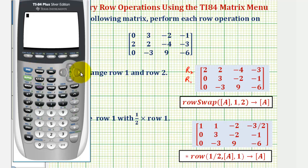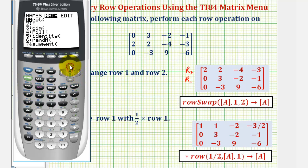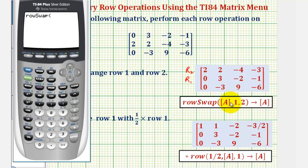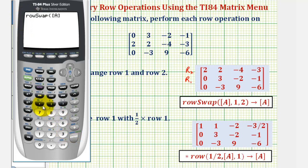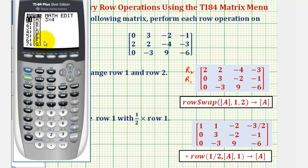From the home screen, we'll press second, matrix, right arrow once to math, and then press the up arrow. We want option C. Press enter. Next, we want to enter the matrix stored in matrix A. So press second, matrix — A is already highlighted — press enter, comma. We want to interchange row one and row two, so we enter one, comma, two, close parenthesis. We want to store this new matrix in matrix A, so we'll press store, then second, matrix, select matrix A by pressing enter, and then enter.